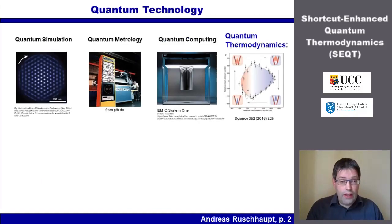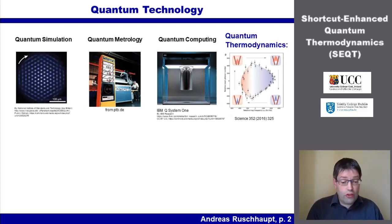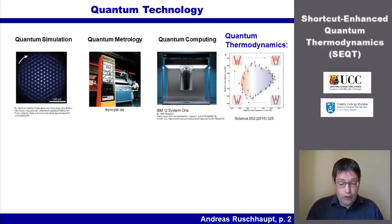If technology development, for example in microchips, is reaching smaller and smaller scales, then particles such as electrons start to behave completely different from daily life experience. Everything must then be described by quantum physics. However, one can also take advantage of this strange behavior of particles, and this leads to new technologies called quantum technologies. Subfields of quantum technologies are quantum simulation, quantum metrology, and quantum computing.